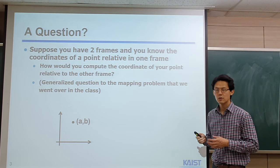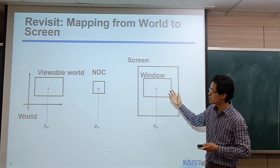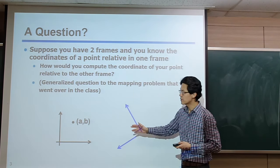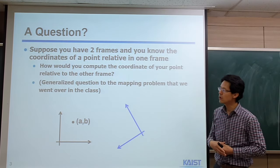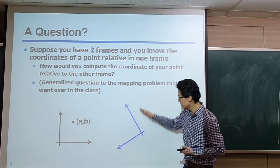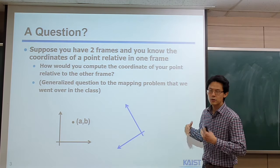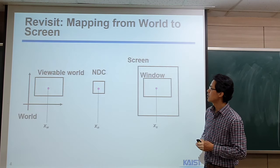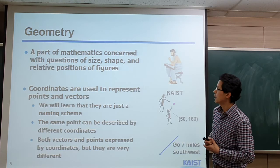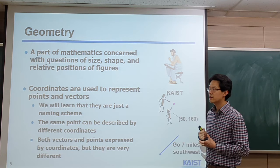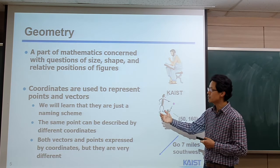So far I talked about the different transformations, and also this kind of mapping from the world space to the screen space. But these issues boil down to this question: suppose that you have a point with this coordinate defined within this space, and then I want to know what's the coordinate of this point with respect to this new frame or coordinate system. That's actually the main question we have tried to answer in this lecture. These kind of issues are addressed a lot in classical mathematics — basically in geometry. You will know that coordinate is nothing but just an introduced concept to represent this point and vector.